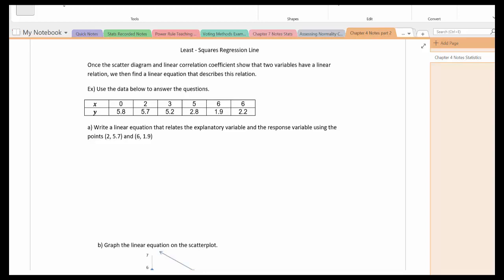In this video we're going to talk about the least squares regression line and residuals. Once a scatter diagram and linear correlation coefficient show that two variables have a linear relation, we then need to find a linear equation that describes the relation. So let's use the data below to answer the questions.